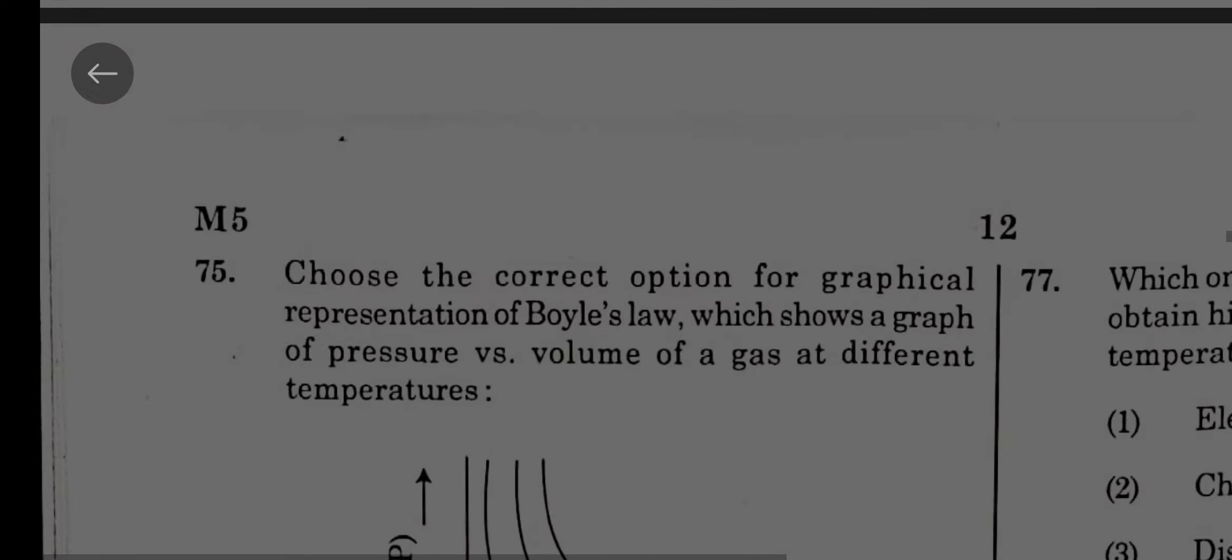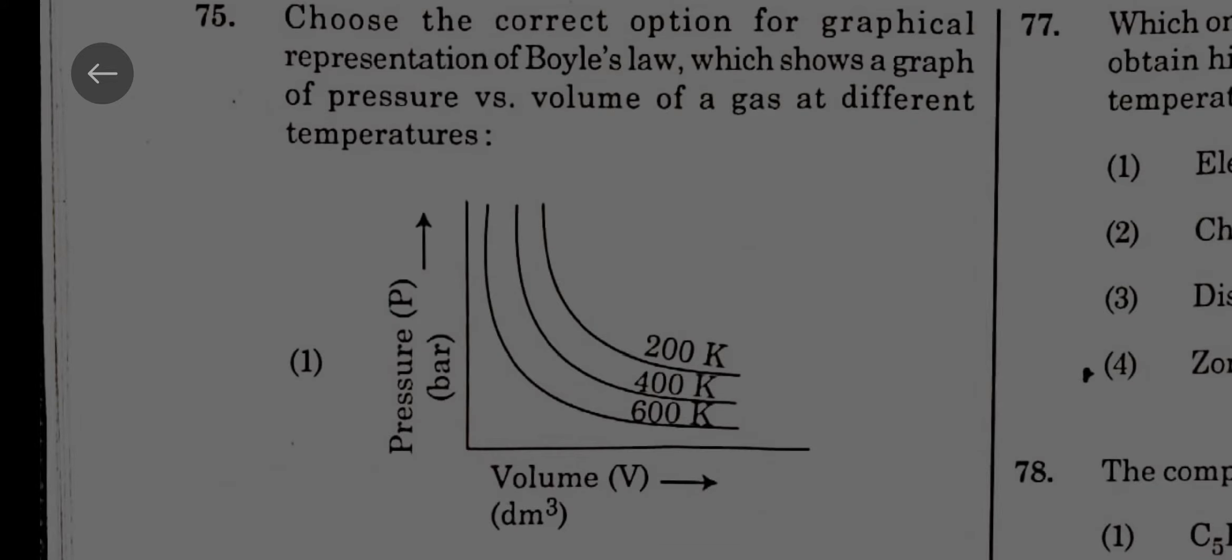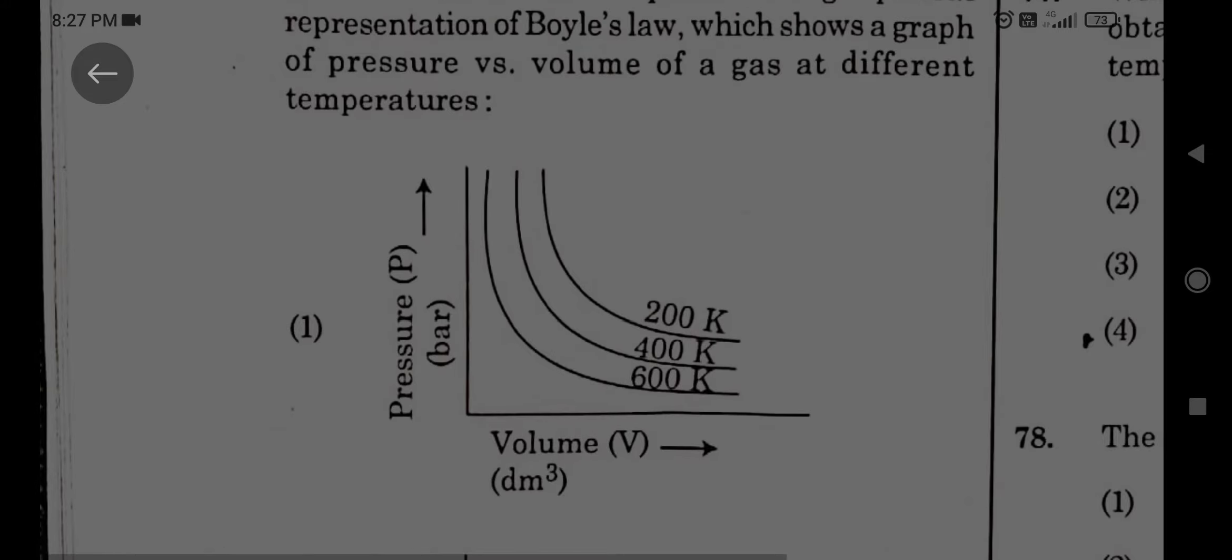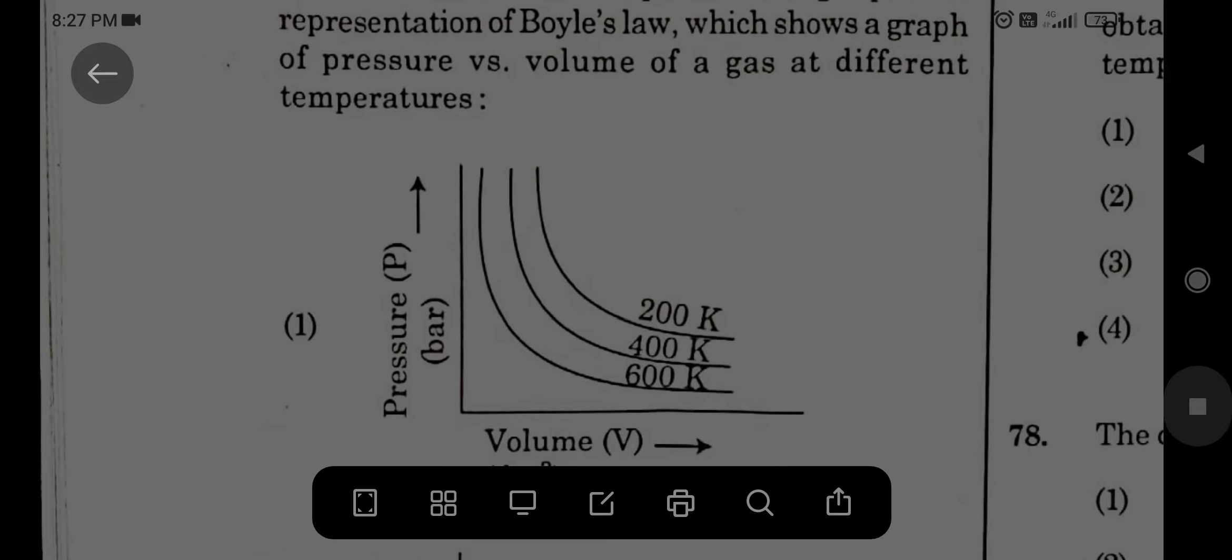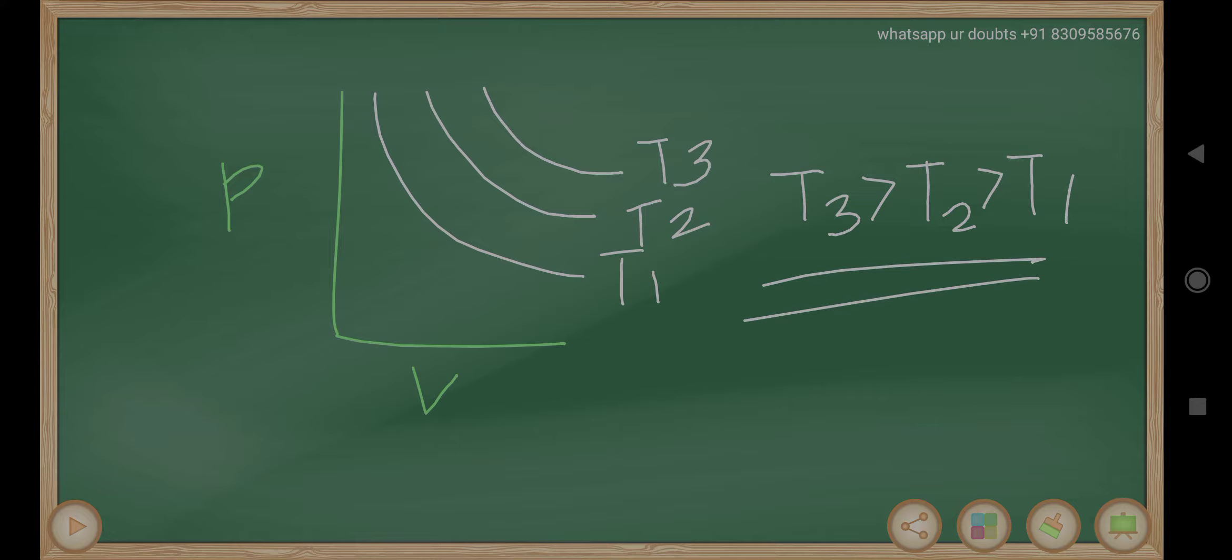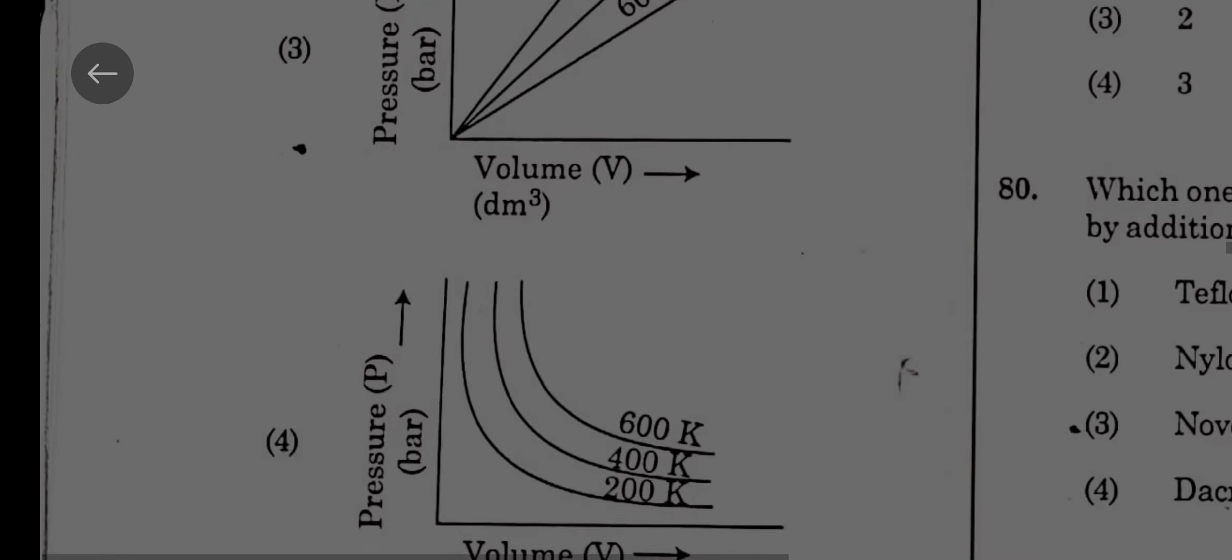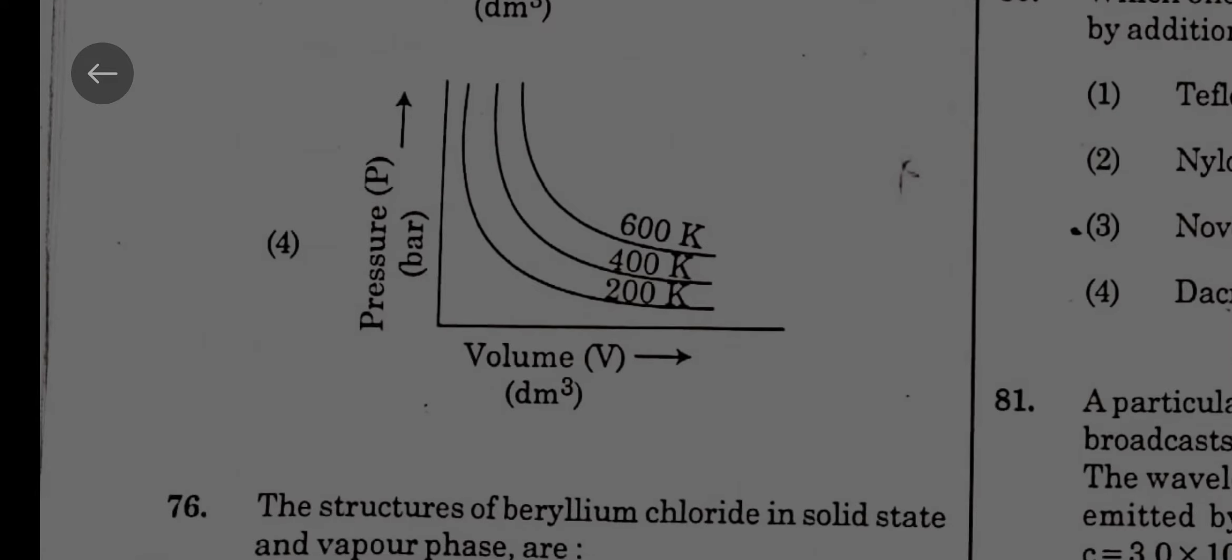Choose the correct option for the graphical representation of Boyle's law. This is one interesting one, but you are very lucky because two options are there. When you are taking P versus V graph, rectangular hyperbola will be there. But as you are moving up, if this is T1, this is T2, this is T3, T3 greater than T2 greater than T1. So here the right option is this: the graph at 600 K should be higher at top, then 400, then 200.